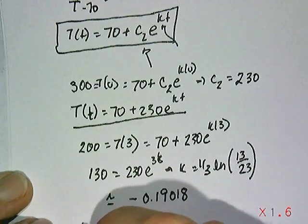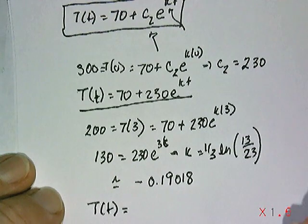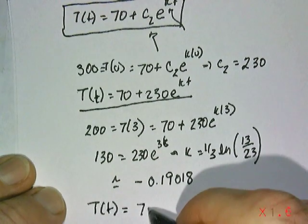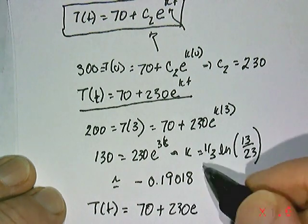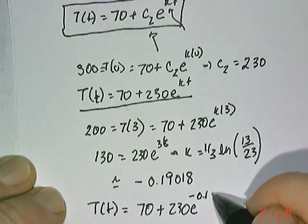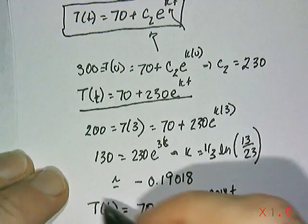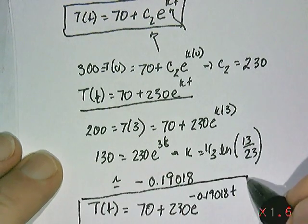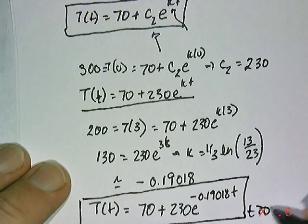And so ultimately, the cooling function, or how temperature changes with respect to time, is 70 plus 230 times e to the negative 0.19018 times t power. And this is true now for time marching forward, t greater than or equal to zero.